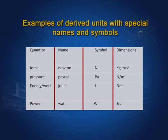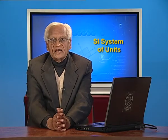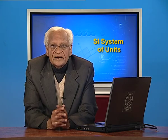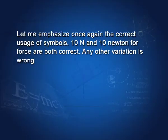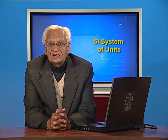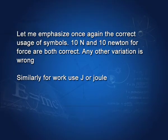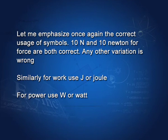Let me emphasize once again the correct usage of symbols. Ten capital N or ten newton with small n for force are both correct — any other variation is wrong. Similarly, for work, capital J or joule with small j are correct. For power, use capital W or watt with small w.